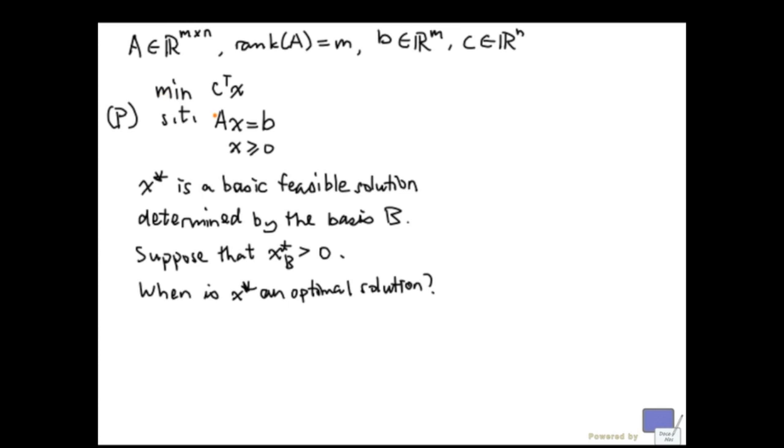The problem we are looking at is minimize C transpose x, subject to Ax equal to b, x at least 0.